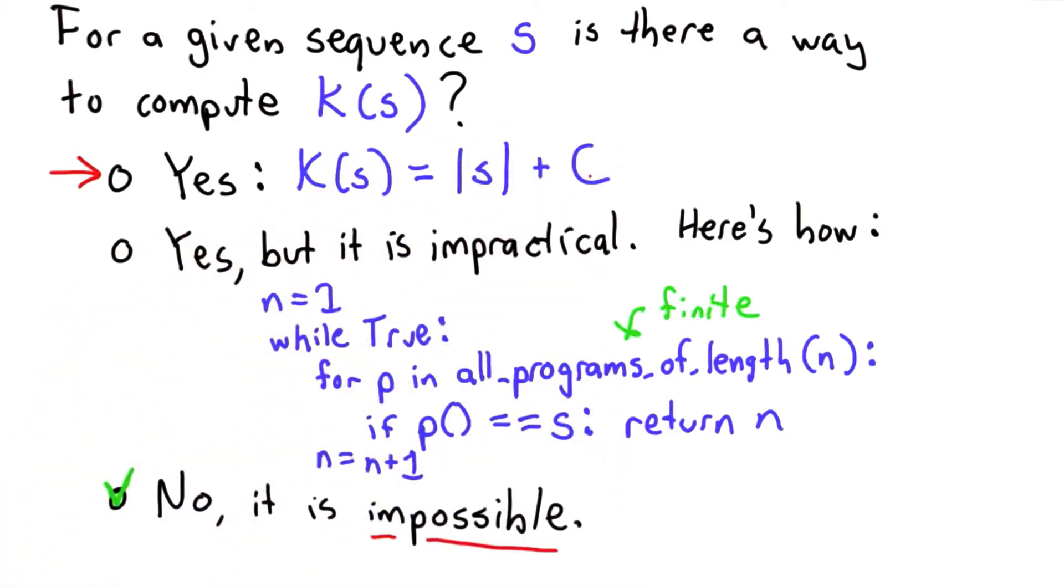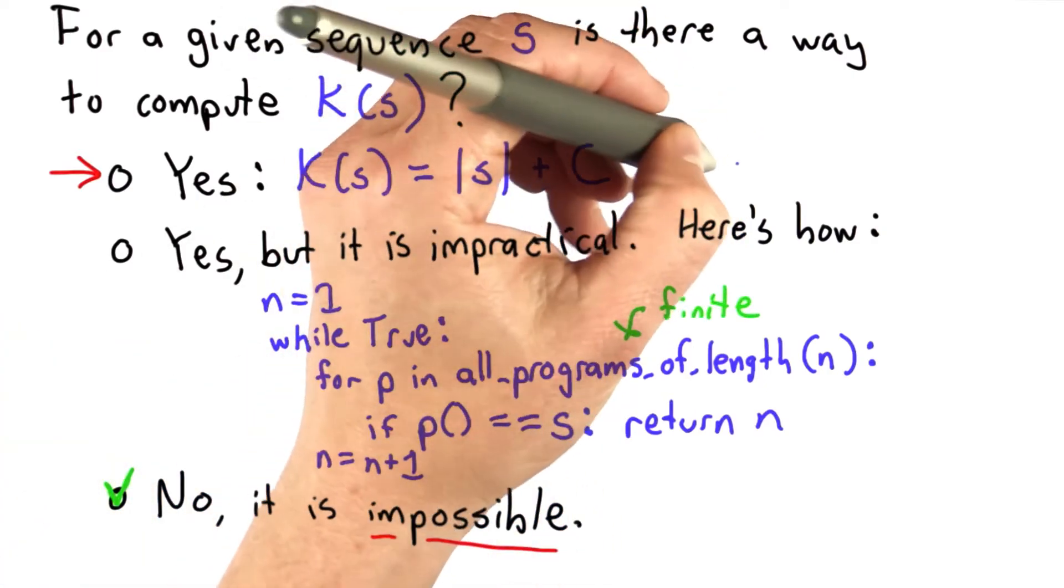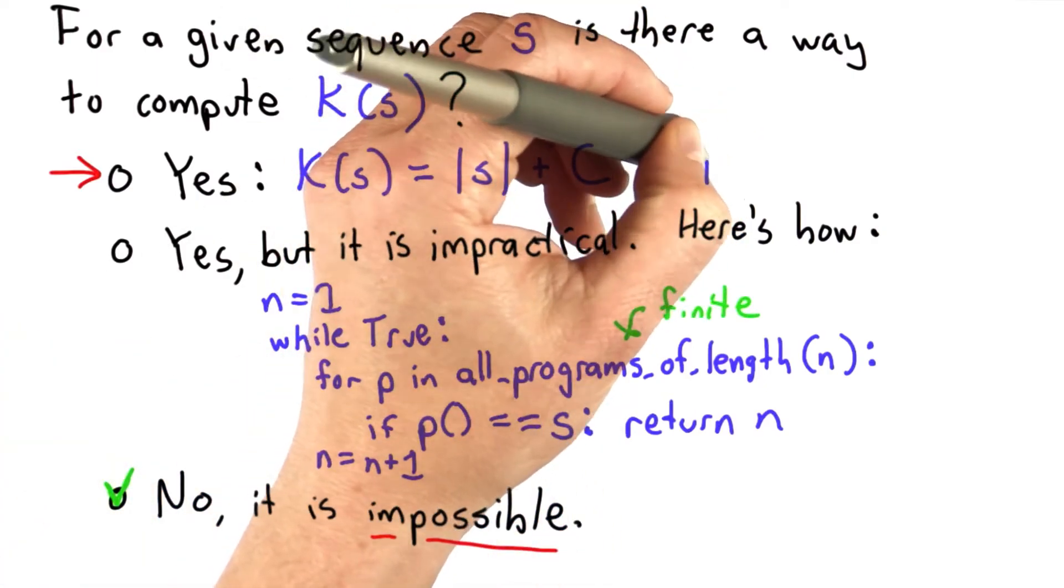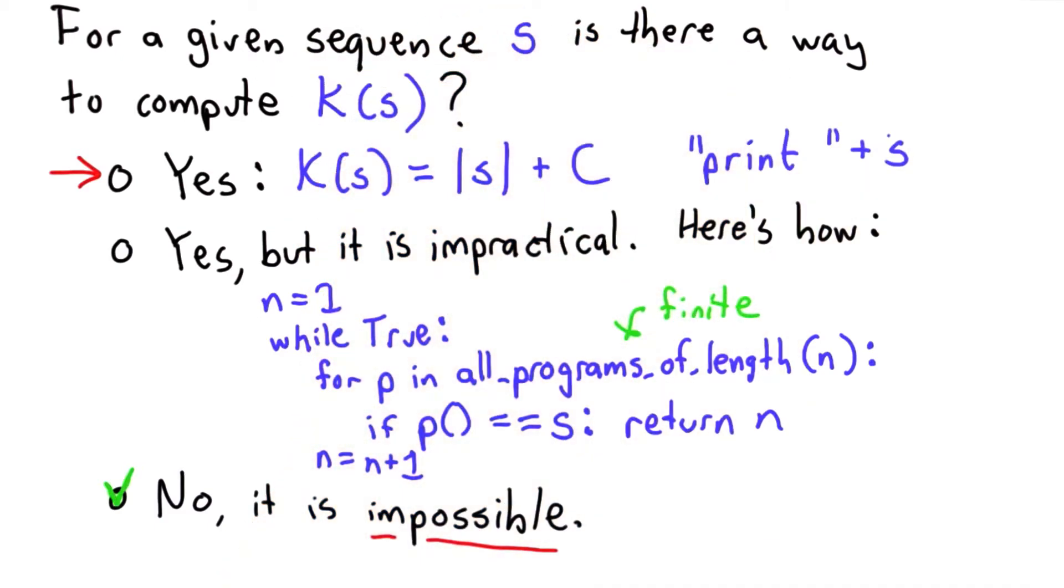So this gives the maximum value of the Kolmogorov complexity of a sequence length s, and an example of such a program would just be this Python program that would be the program print plus s.